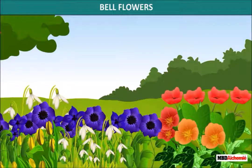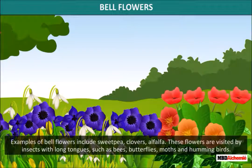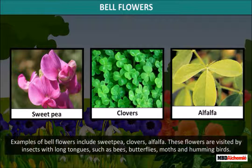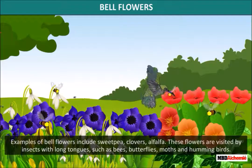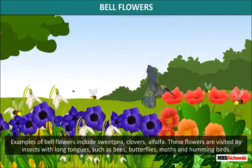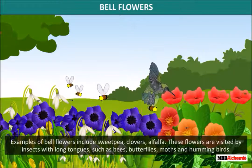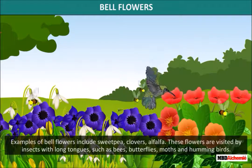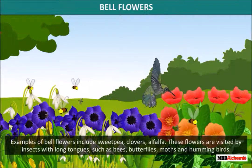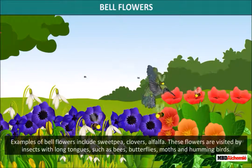Examples of bell flowers include sweet pea, clovers, and alfalfa. These flowers are visited by insects with long tongues, such as bees, butterflies, moths, and hummingbirds.